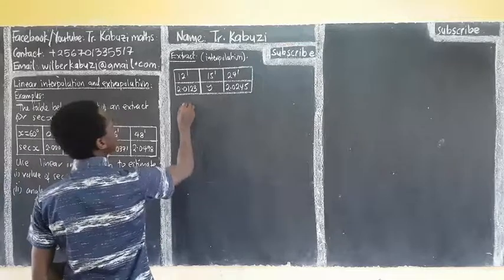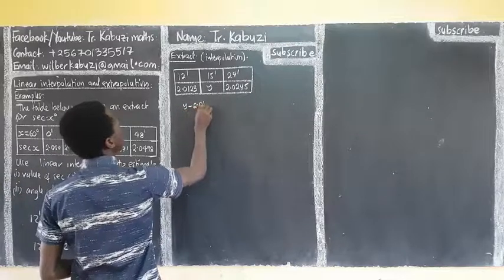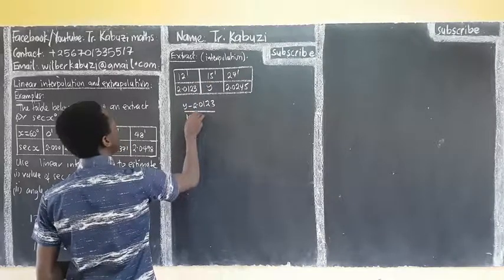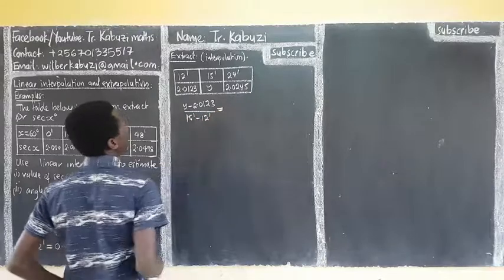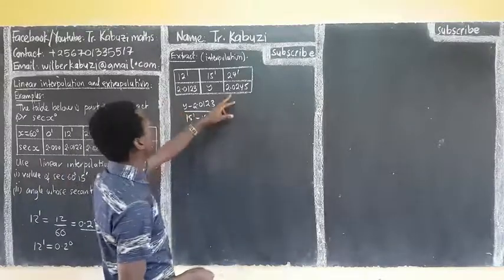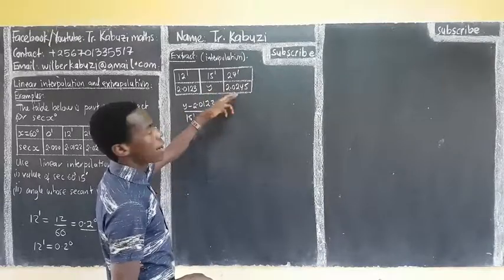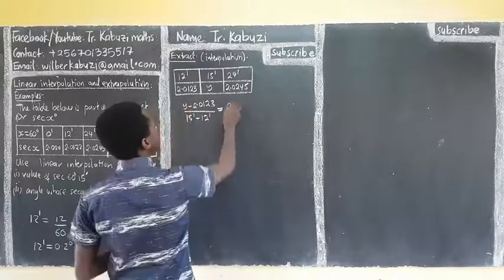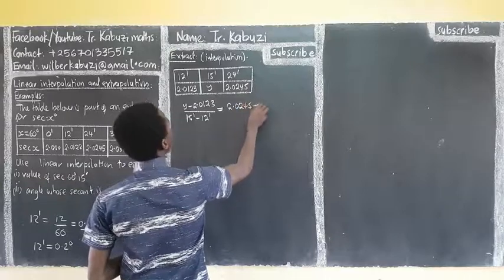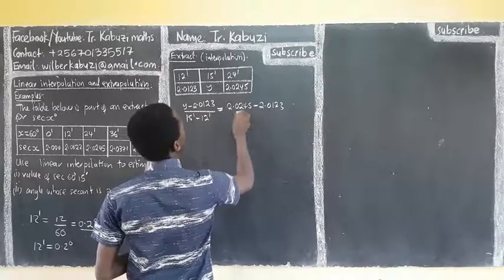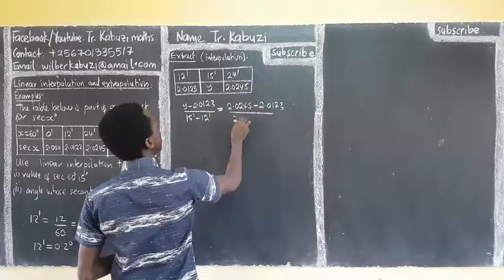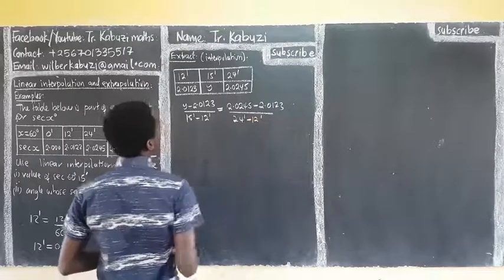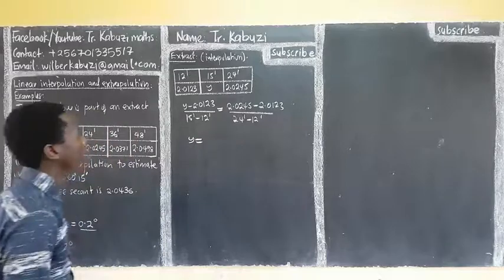What we do is: this minus this over this minus this. So Y minus 2.0123 over 15 minutes minus 12 minutes equals this minus this over this minus this. That's 2.025 minus 2.0123 over 24 minutes minus 12 minutes. Then from there, give your answer straight away.